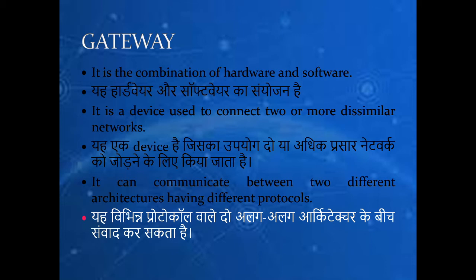When we talk about gateway, it is not only hardware — it is also a combination of hardware and software. It is used to connect two or more dissimilar networks. The gateway supports the connection of two dissimilar networks having two different protocols, which was not supported by the router. So if one network is following one protocol and another network is following a different protocol, a gateway can be used to connect those two networks.